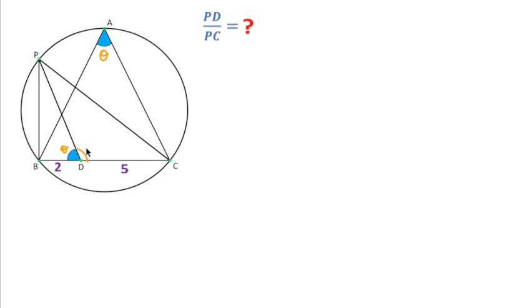And if I consider this angle as alpha, then this angle will be theta minus alpha, so that the sum of these three angles will be equal to 180. Now since this angle is theta, then this angle will also be theta because angles made on the same segment are always equal.